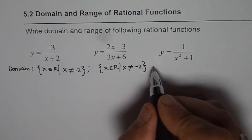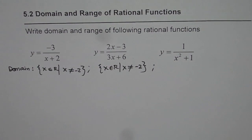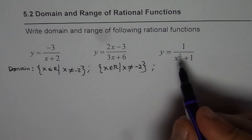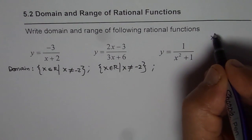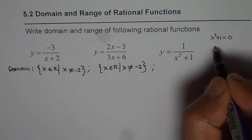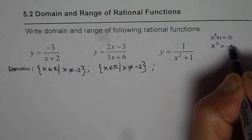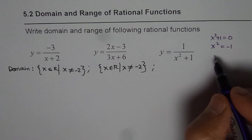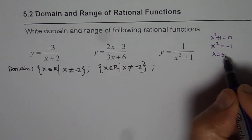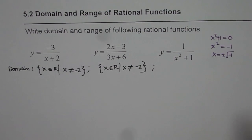In this particular case, what happens? We'll equate x square plus 1 equals to 0. So we get x square equals to minus 1, but x square can never be minus 1. Or we can write x equals to plus minus square root of minus 1. Well, that is not real. So there is no restriction here.